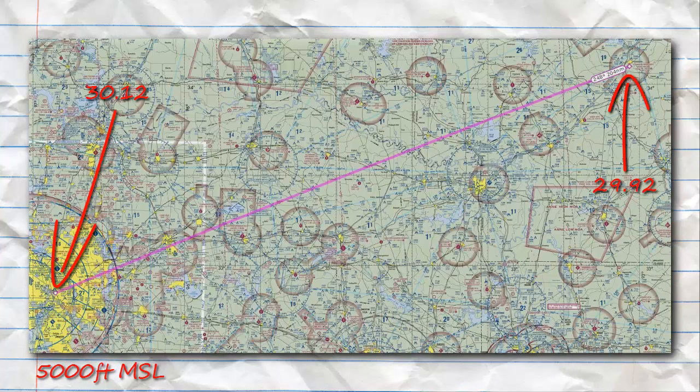Well, along the route, there was a pressure drop, and the altimeter setting reported at Arkadelphia was 29.92. But for whatever reason, we did not change our altimeter setting. Well, the actual altitude of the aircraft, our true altitude, whenever we got into that new pressure, would be about 4,800 feet.